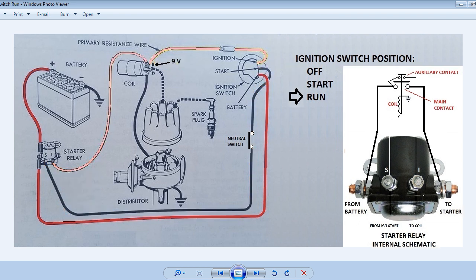In the run position you will notice the starter relay contacts both open because there are no longer 12 volts on the start wire from the ignition switch. Without the auxiliary contact on the starter relay closed the coil gets its power through the resistance wire which effectively supplies 9 volts to the coil. Another issue that can occur is if there is a break in the pink wire. The engine will start running when the ignition switch is in the start position because the starter relay auxiliary contact is supplying power to the coil. But the engine will die when the key is released. The reason there may be a break in the pink wire is there are bulkhead connectors at the firewall that can be corroded.